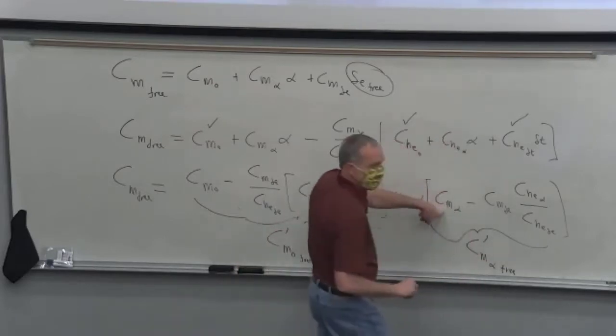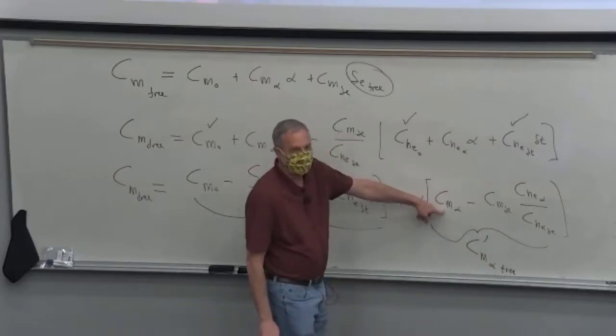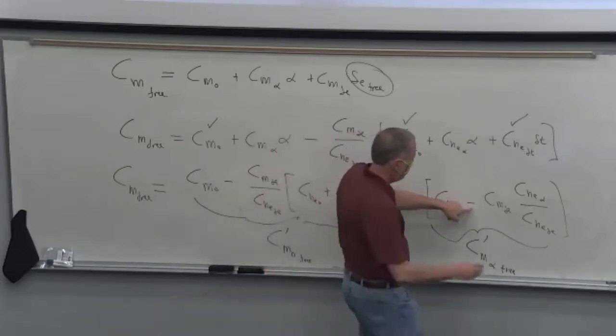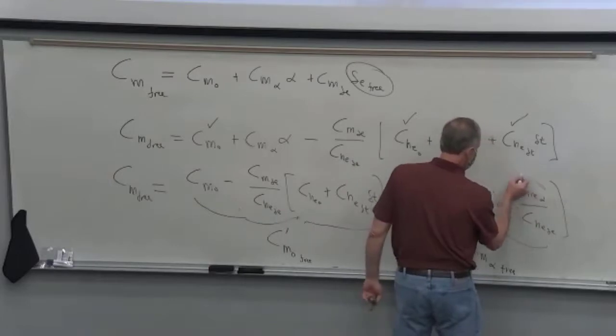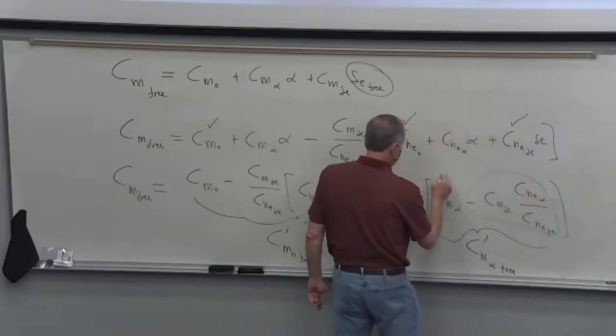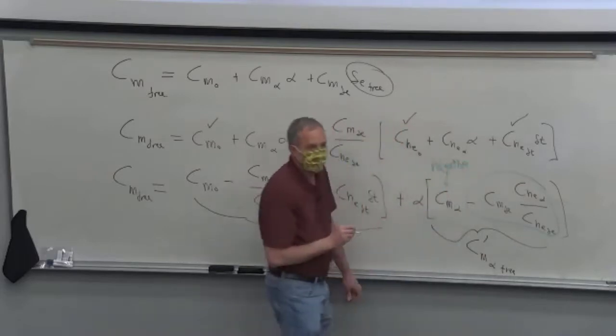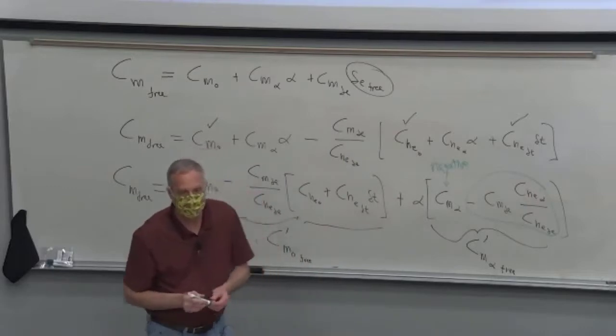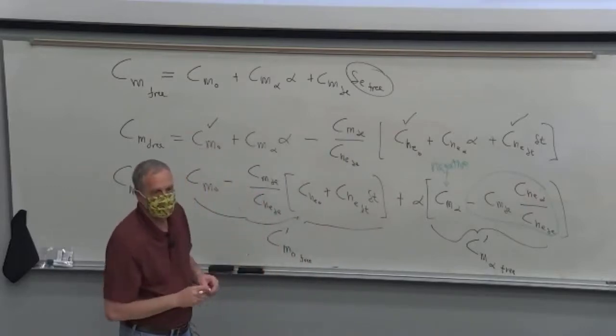And this is the change right here. There's our original stick fixed pitch stability. And we're subtracting or adding to this. So we want to find out, well, this thing is, of course, for stability is negative. We want CM alpha to be negative for stability. So we need to find out whether that's a positive or a negative number.